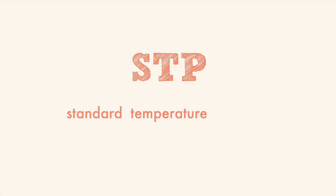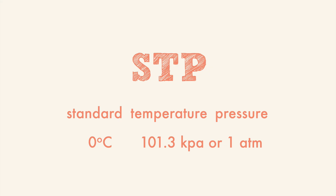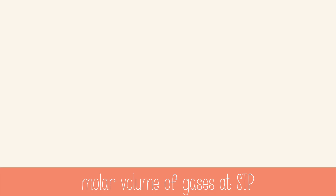There are lots of calculations that must be done to figure out the number of moles of a gas at different temperatures and pressures, but there's a quick way to do conversions if the temperature and pressure are at the standard setting. STP stands for Standard Temperature and Pressure, and that's 0 degrees Celsius and 101.3 kilopascals, or 1 atmosphere (atm).